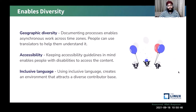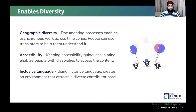A community handbook also enables diversity. It enables geographic diversity by documenting processes that support asynchronous working across different time zones, and people can utilize translation tools to help them understand content better. Accessibility is also addressed by keeping guidelines in mind that enable people with disabilities to access content. Inclusive language is another important element — you should avoid phrases or sentences that negatively affect certain groups of people.